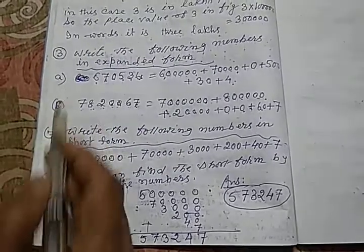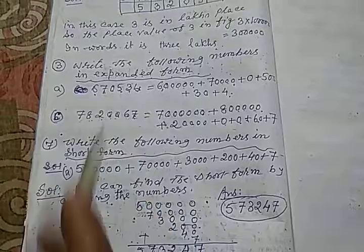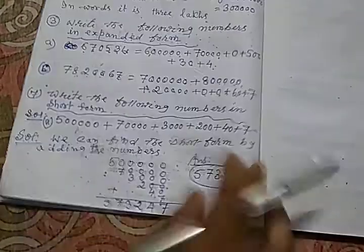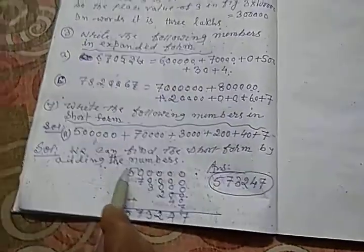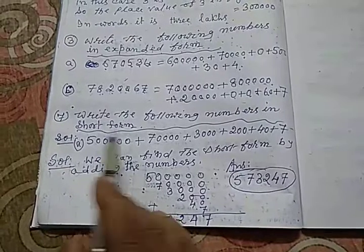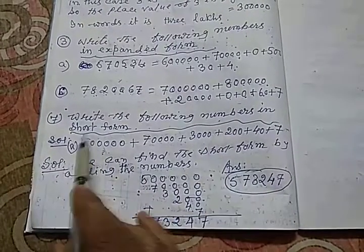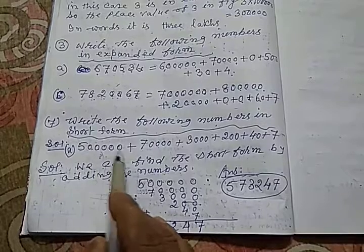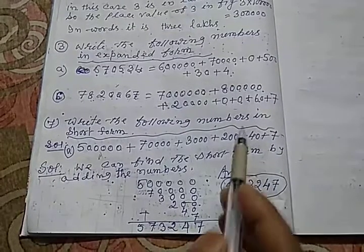Last 7 number. Maine 3, 4, 5 jump karke aaya. Kyunki in dono mein similarity hai. Ye expanded form hai, ye contracted form hai. Dekho, write the following numbers in short form. Ye number diya gaya, 5, 1, 2, 3, 4, 5, 0s, aisa karke likhe.